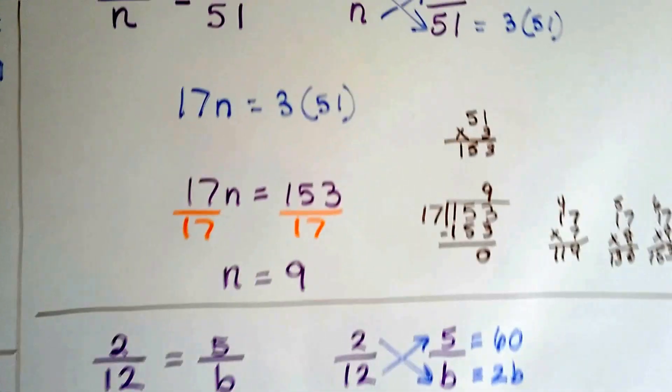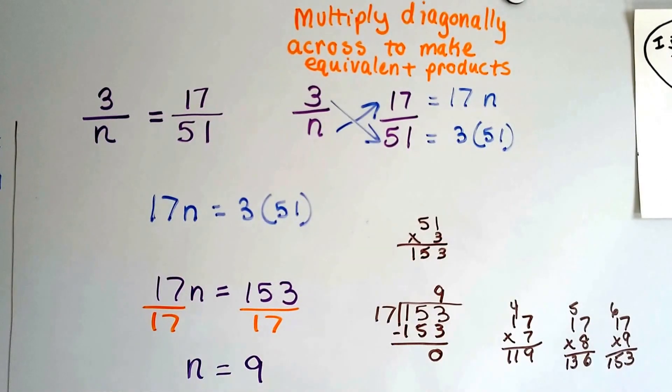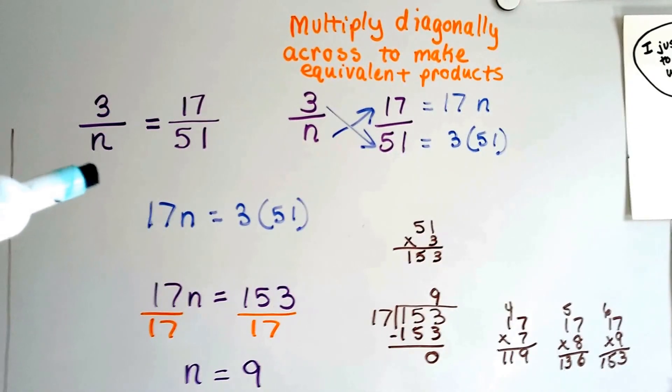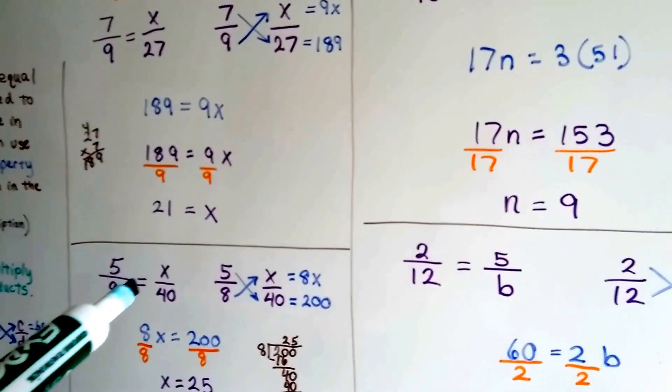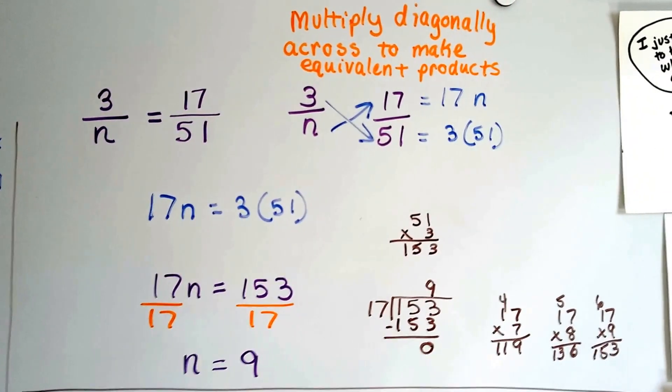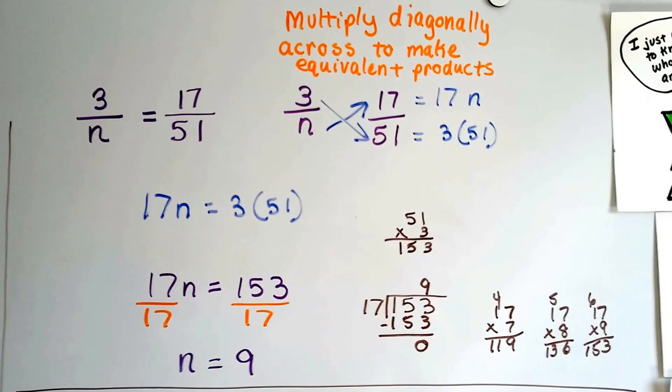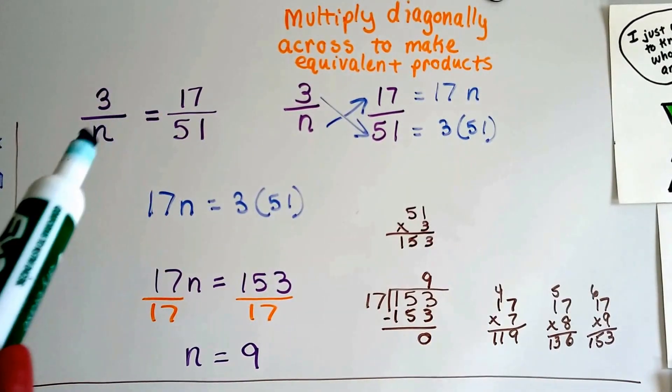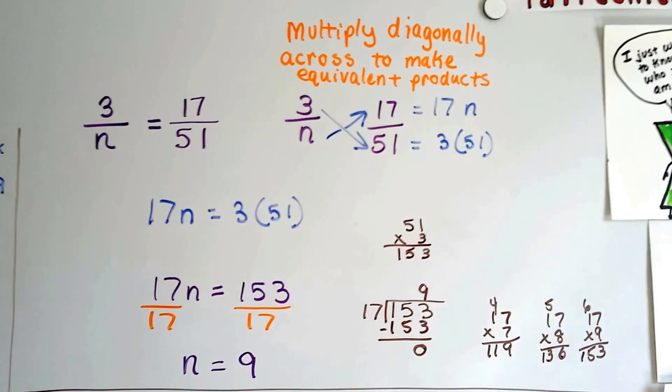Wasn't that easy? Let's try it again for those who need it. For those of you who don't, you can watch the next video. So we're going to multiply diagonally across to make equivalent products. We've got 3 over n. Now our variable is down in the denominator. Before we had it up in the numerator. Now if you saw the last video, you know how to solve this without doing cross products, using the multiplication property of equality. And it's kind of an important thing to know. So we just multiplied both sides of the equation by this denominator in the n. But in this one, we're going to do cross products, cross multiplication.